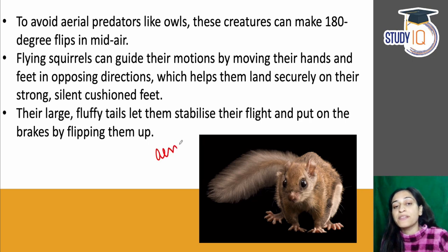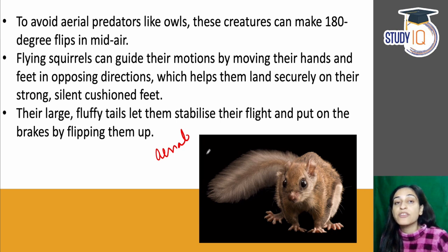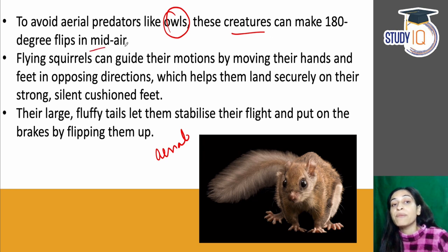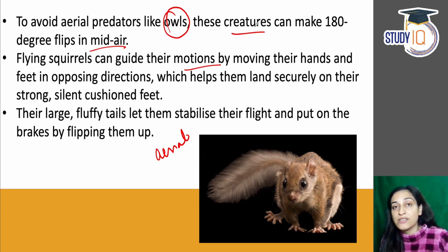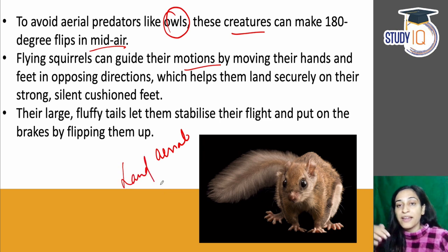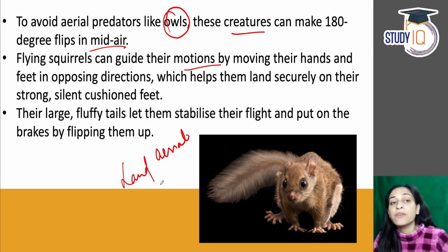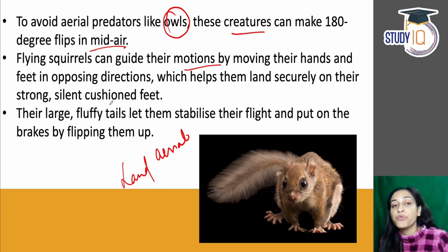Now, there are aerial predators and ground predators. Ground predators will kill it on the ground, while aerial predators like owls will kill it in the air. These creatures can do a 180-degree flip in mid-air. Flying squirrels guide their motion by their hands to change direction. Their feet face opposing directions, and when they land, cushioned feet help them land securely and silently.